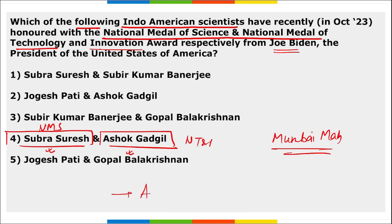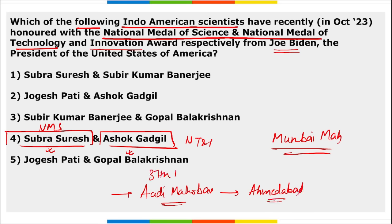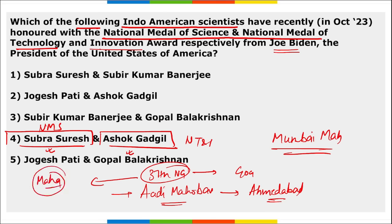Adi Mahotsav is observed in Ahmedabad. The 37th National Games were held in Goa, and Maharashtra topped the medal tally, securing the top position.